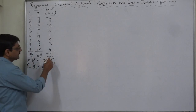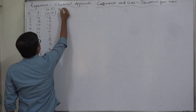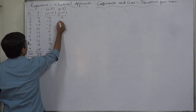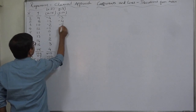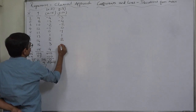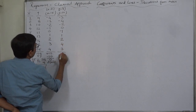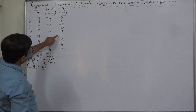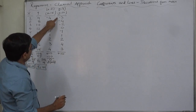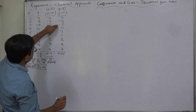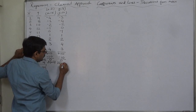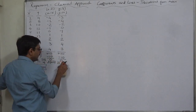Similarly, y minus ȳ equals y minus 12: 9-12 = -3, 8-12 = -4, 10-12 = -2, 12-12 = 0, 11-12 = -1, 13-12 = 1, 14-12 = 2, 16-12 = 4, 15-12 = 3. The positive total is 1+2+3+4 = 10 and the negative total is -4-3-2-1 = -10, so the summation is also 0, confirming there is no error in this column.